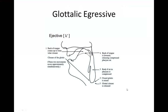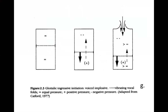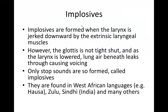Here's another view of how an ejective is produced. The IPA symbol is a 'k' with a little apostrophe after it. The back of the tongue forms a closure just like a normal 'k,' but the glottis is closed — the vocal folds are held tightly together. The whole larynx is raised, creating a body of compressed air in the pharynx. When everything is released, the air comes rushing out as that ejective.